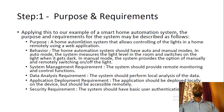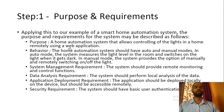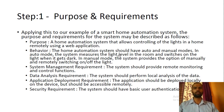We are taking the example of a smart home automation system. What is the purpose? A home automation system that allows controlling of the lights in the home remotely using a web application. What is the behavior? The home automation system should have auto and manual mode. In auto mode the system measures the light level in the room, whereas in manual mode the system provides the option of manually and remotely switching the light on and off.